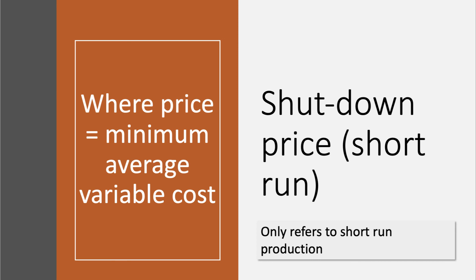Finally, the Shutdown Price in the short run. This is the price that equals the minimum of your Average Variable Cost. We assume that in the short run the first priority is to cover your variable costs and then hopefully make a contribution to fixed costs if you can price higher than that. So the shutdown price is where price equals minimum Average Variable Cost. This only refers to the short run — in the long run you have to make at least normal profit, or otherwise you have to break even.